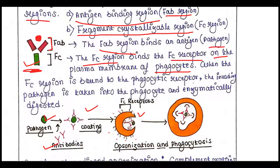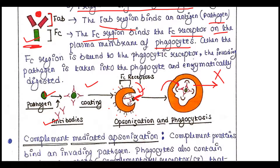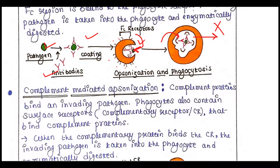The opsonin-coated pathogen comes to the phagocyte and binding occurs between the Fc receptors and the Fc region of the antibody. When this binding occurs, the whole complex gets internalized into the cell and the pathogen is enzymatically degraded by lysosomal enzymes.